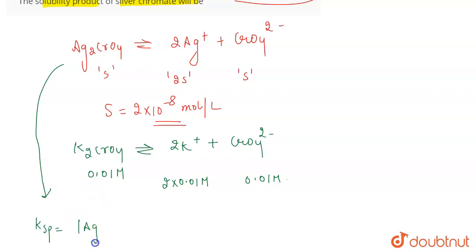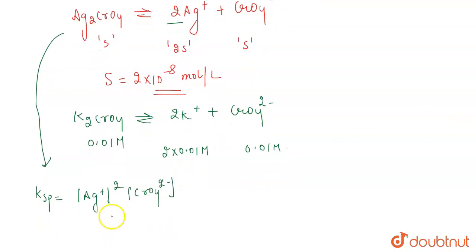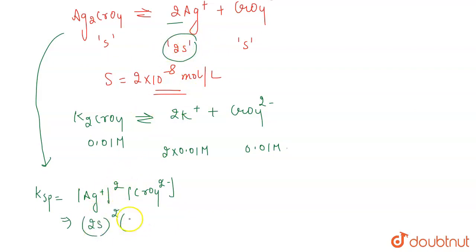The Ksp expression is the concentration of Ag⁺ squared — because its stoichiometric coefficient is 2 — multiplied by the concentration of CrO₄²⁻. The concentration of Ag⁺ is 2s, so this becomes (2s)² which equals 4s².